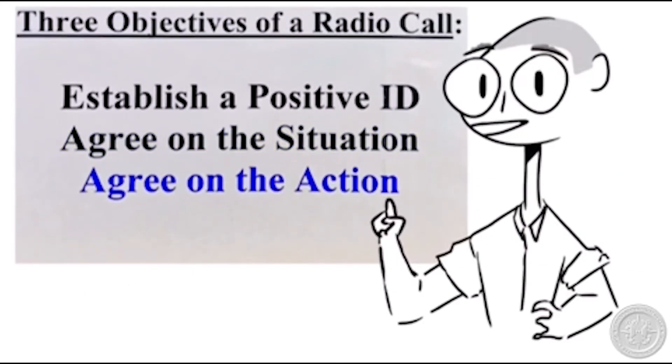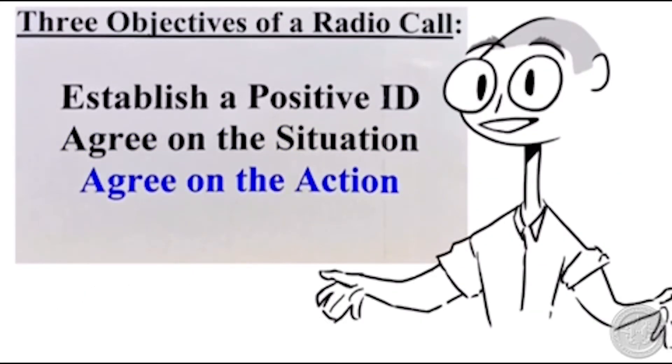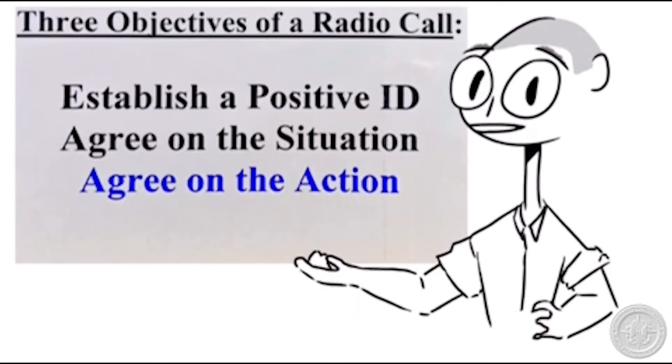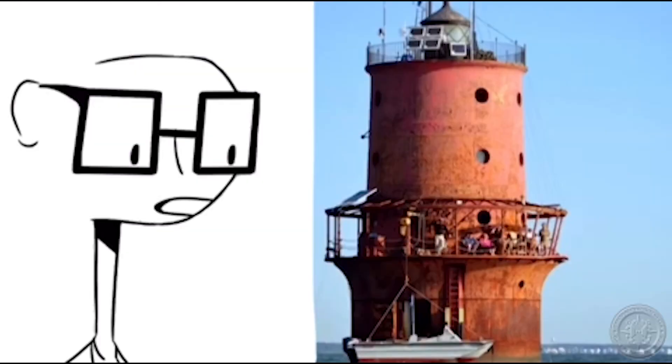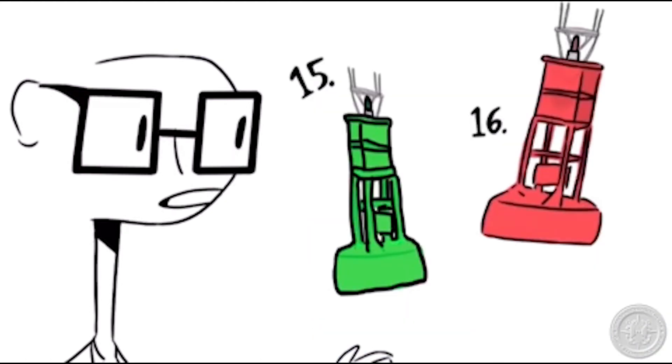That's correct. And lastly, after you know the situation, agree on the action over the radio that both vessels will take to ensure you do not have a collision. Trying to call them back. Looks like they're off of Thimble Shoals Light, outbound Thimble Shoals Channel, approaching buoys 15 and 16. Will do.